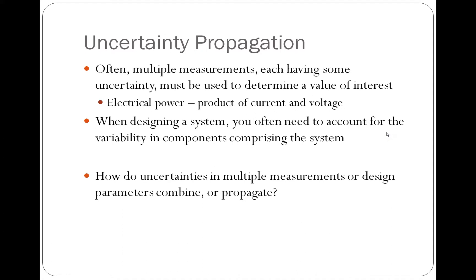Oftentimes, we need to make multiple measurements, each of these measurements having some type of uncertainty, so that we can determine a value of interest. So one example would be electrical power, which is the product of current and voltage. If we use a digital multimeter to measure current and voltage, we're going to have some uncertainty in that current measurement and that voltage measurement.